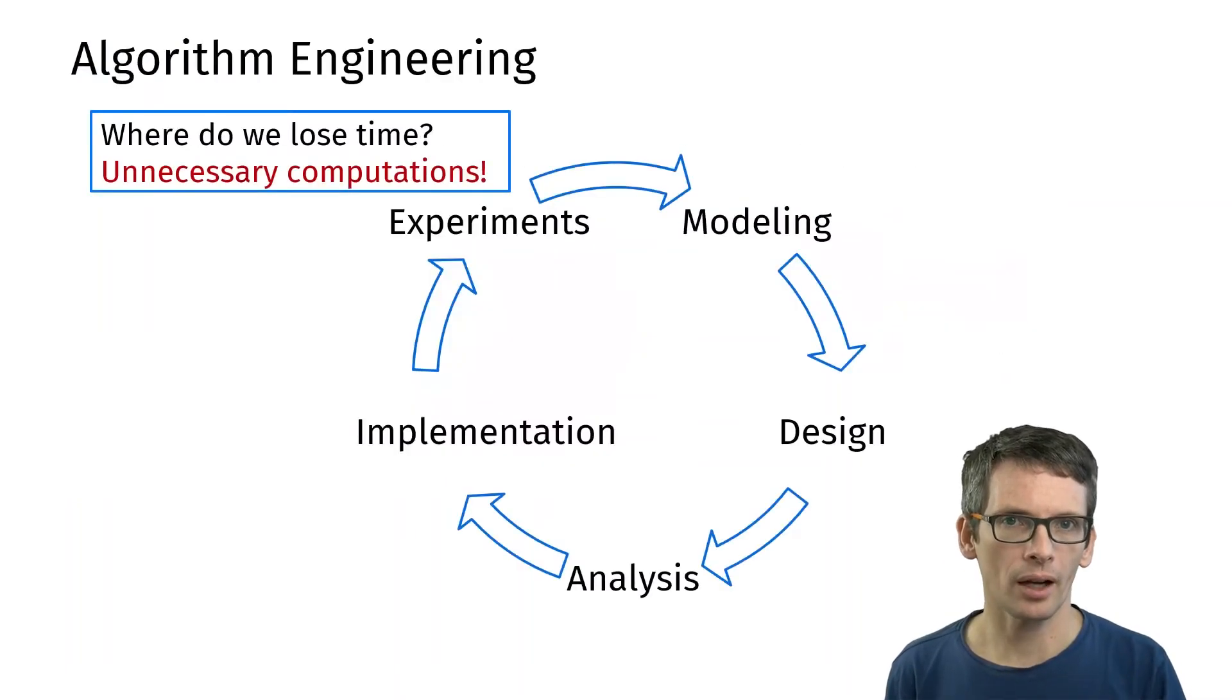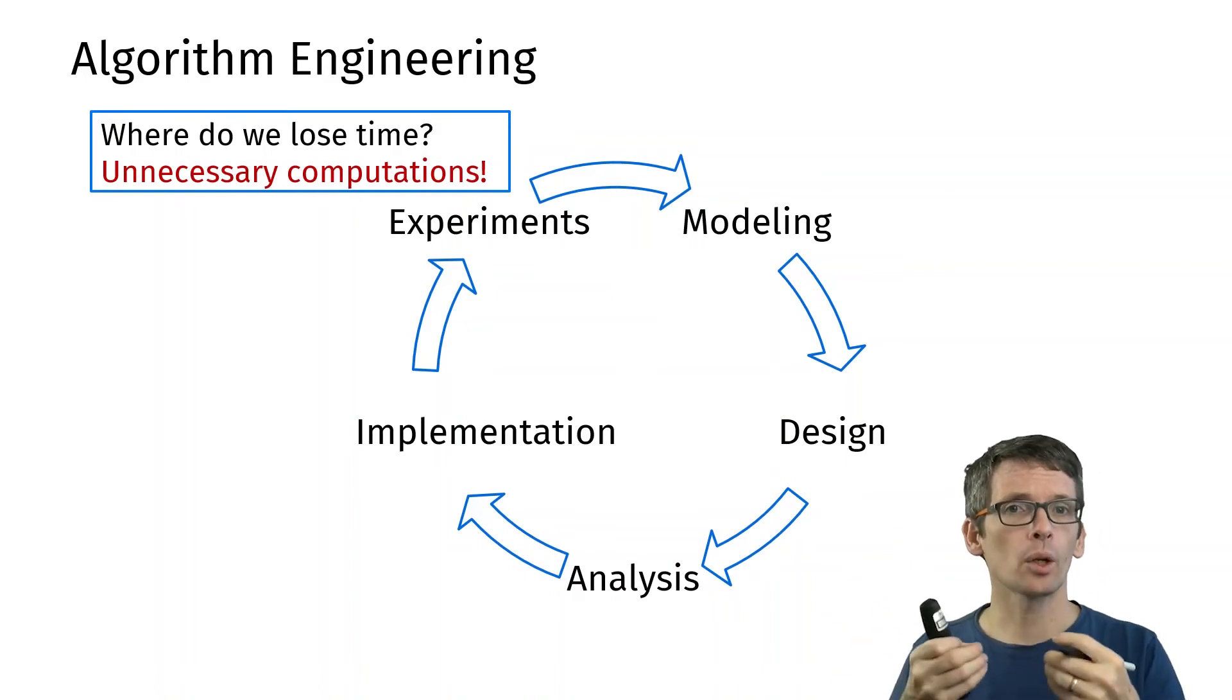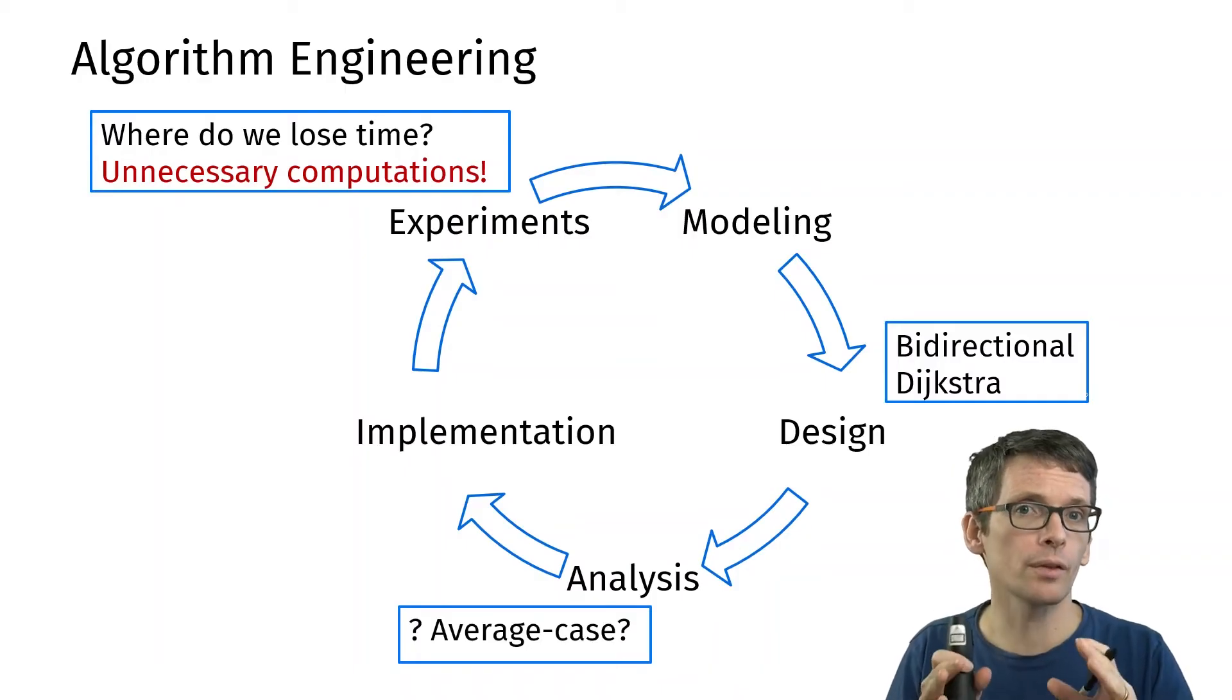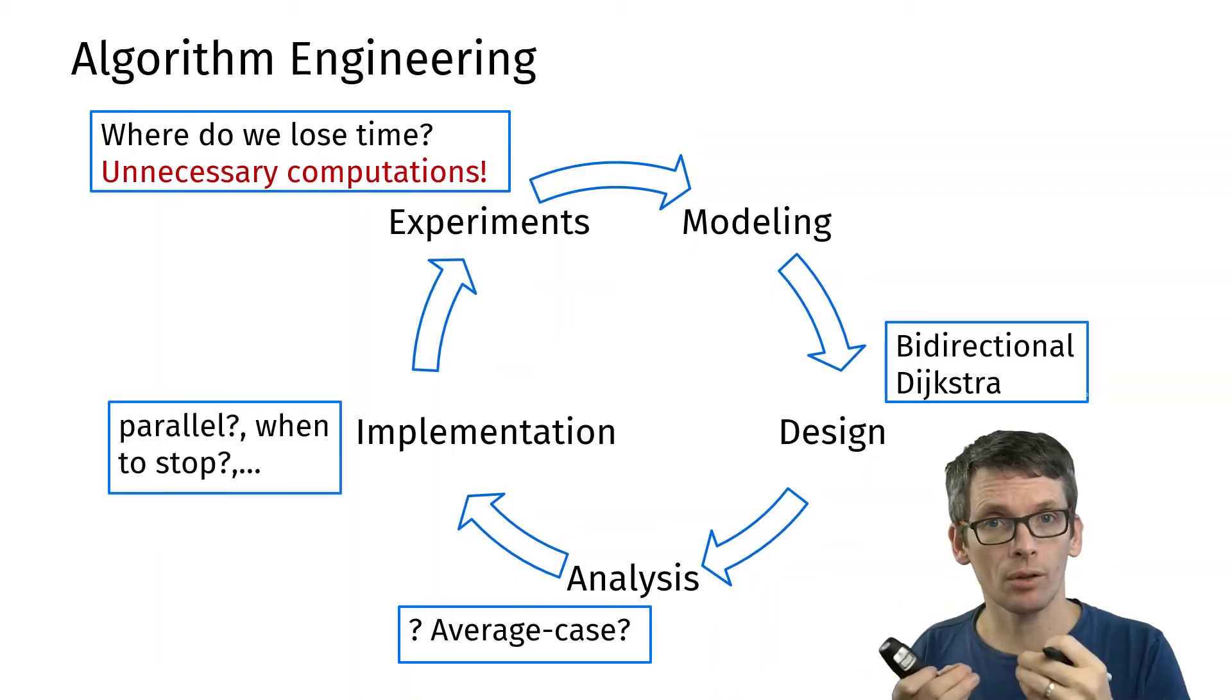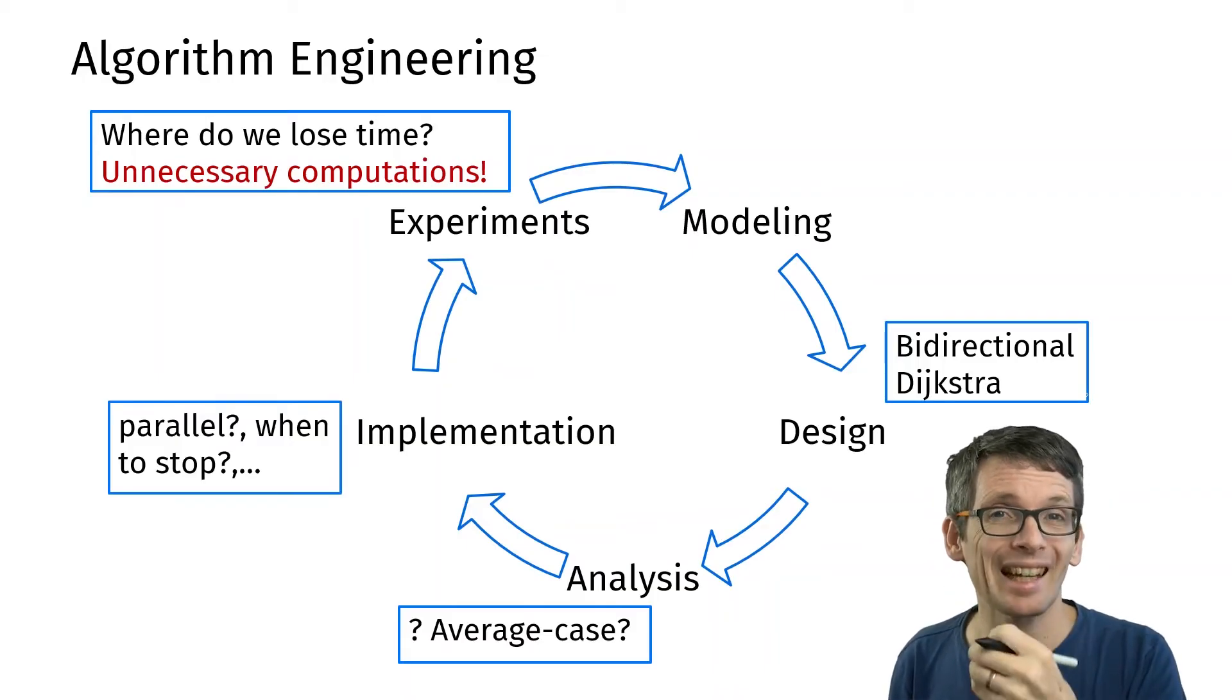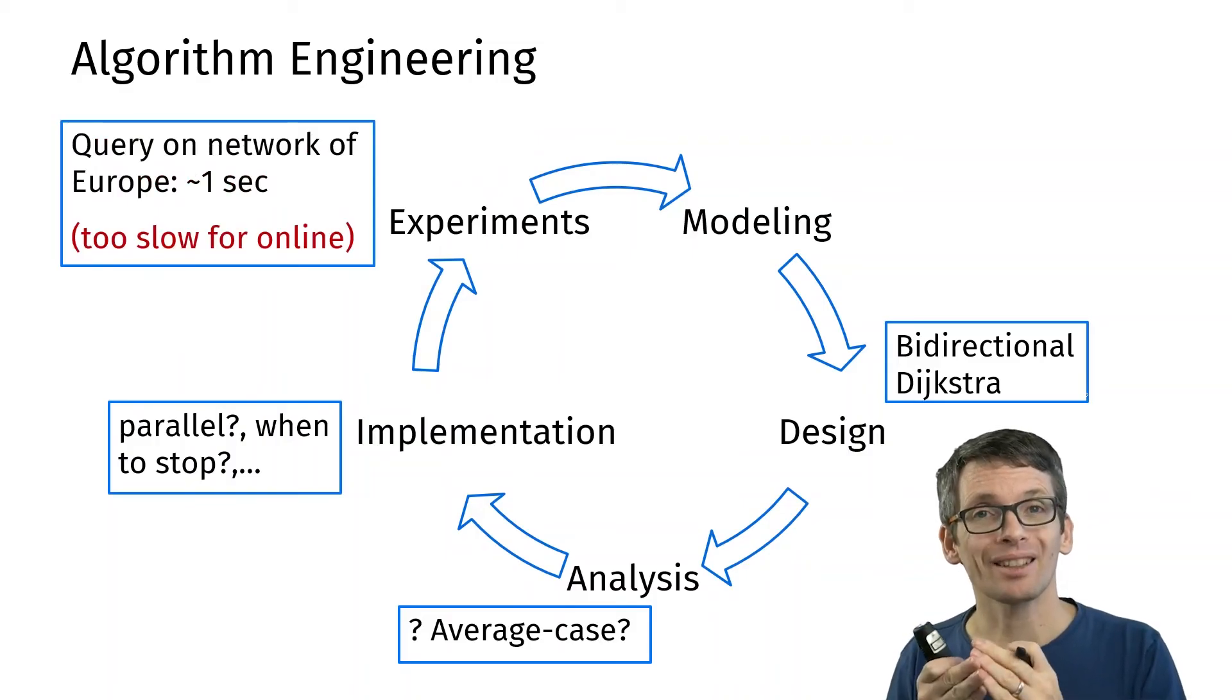Now let's see how far we are in terms of our algorithm design. We started with Dijkstra's algorithm, we did an analysis. Let's assume we did implementation and experimentation. Instead we looked at an example. From that we concluded that a bidirectional search would be a good idea. In terms of theoretical analysis, bidirectional search is actually difficult to handle. So an average case analysis is possible. Implementation, there are again interesting questions, for instance if you want to use parallelization.